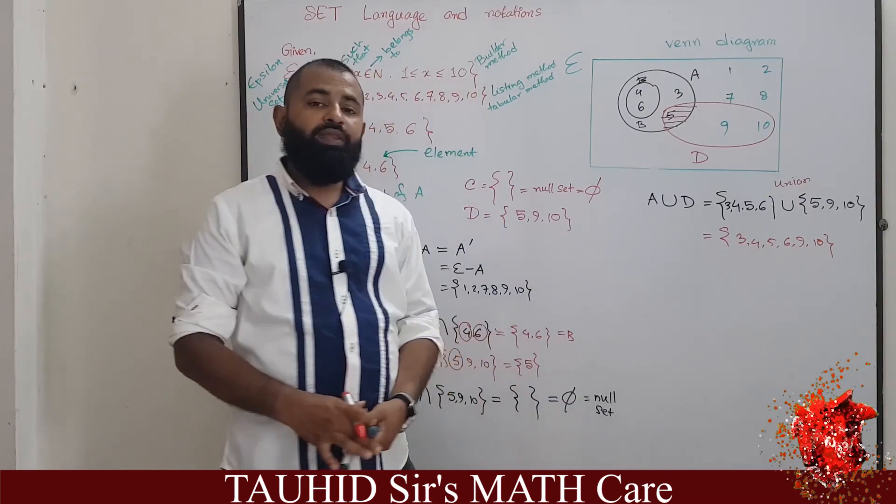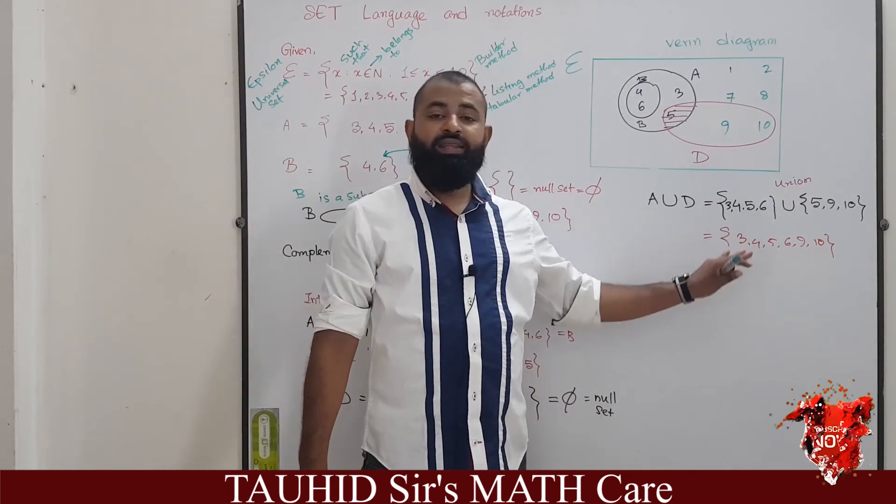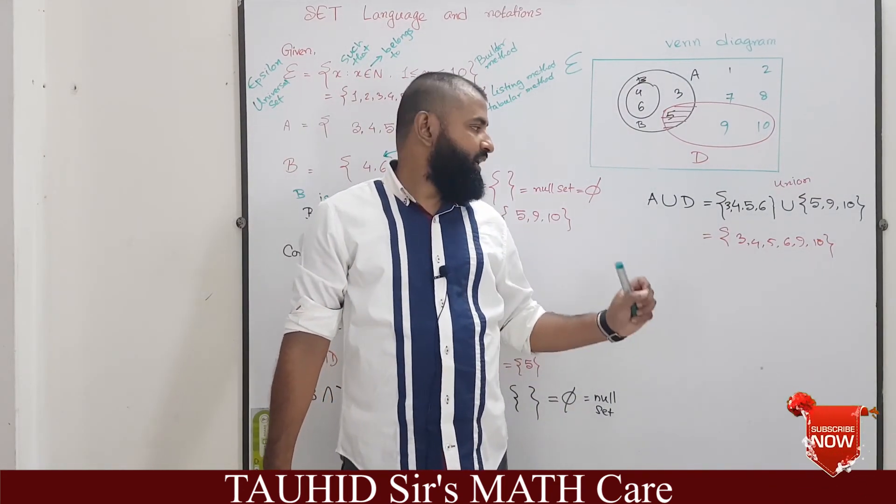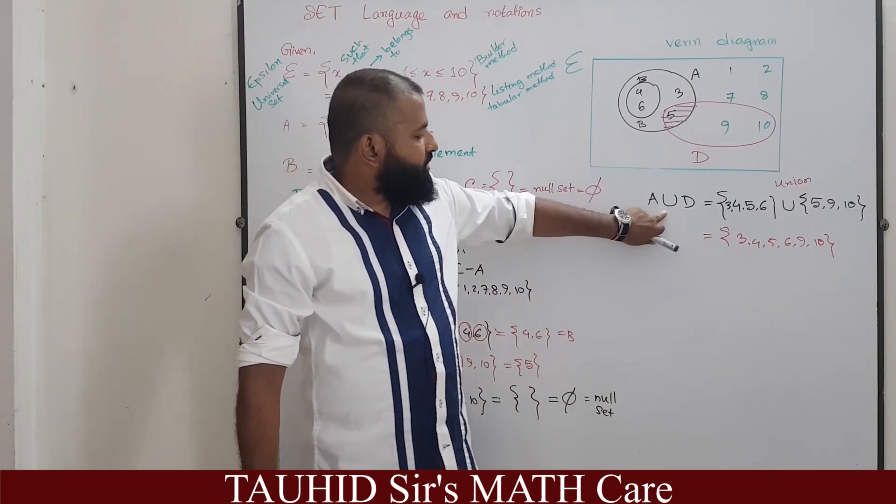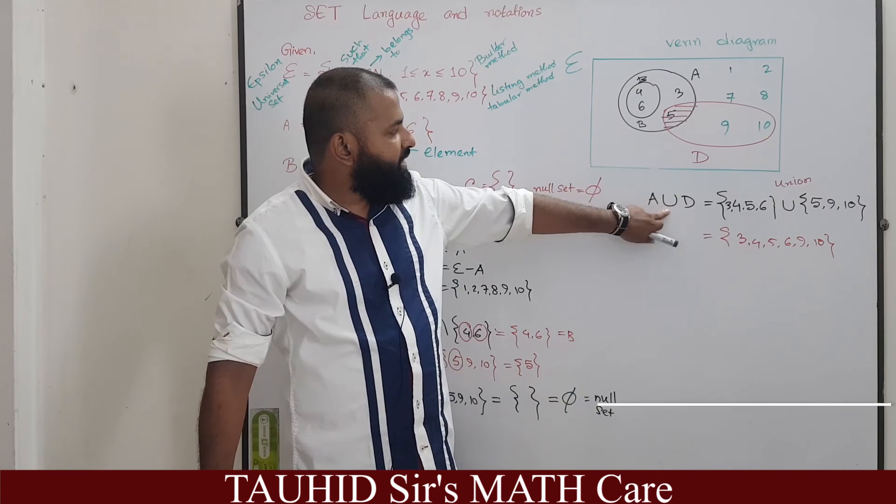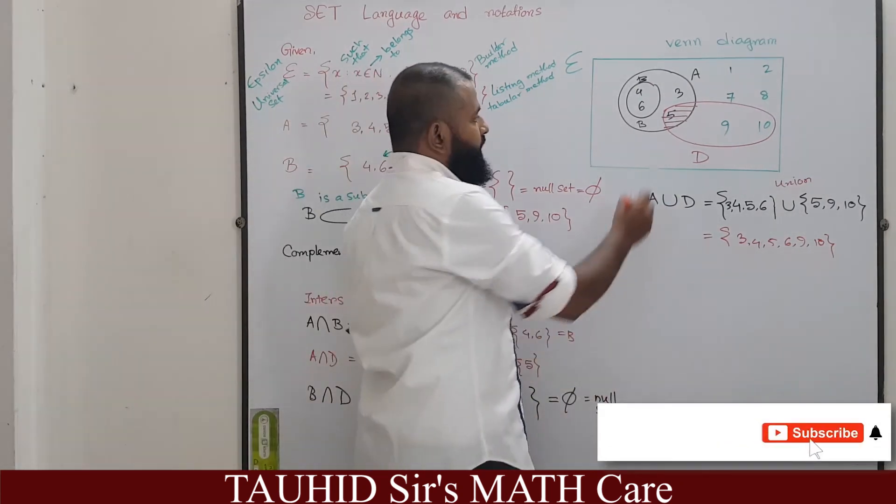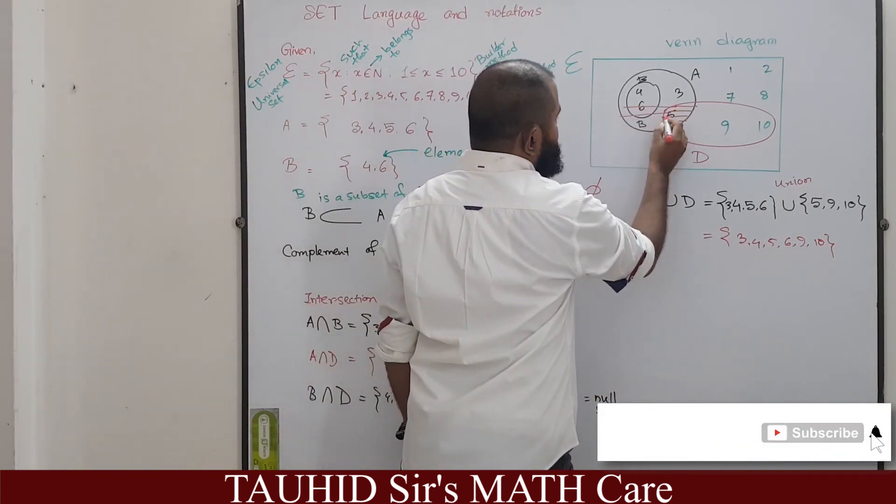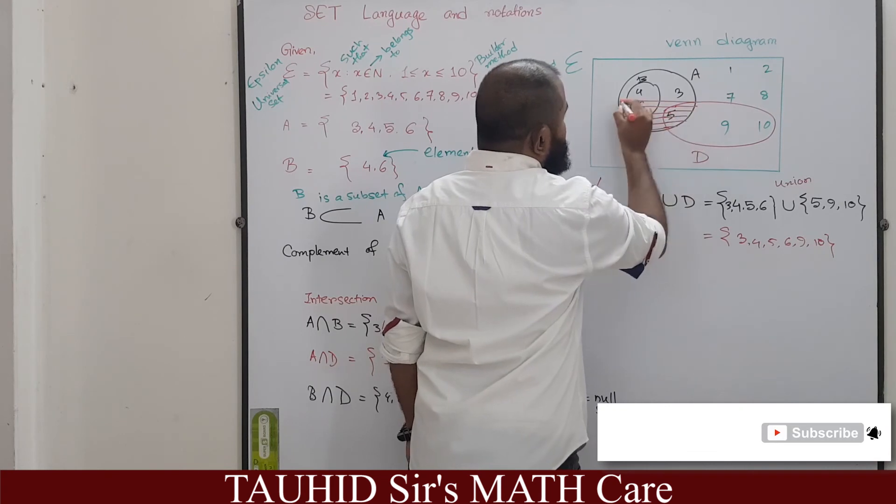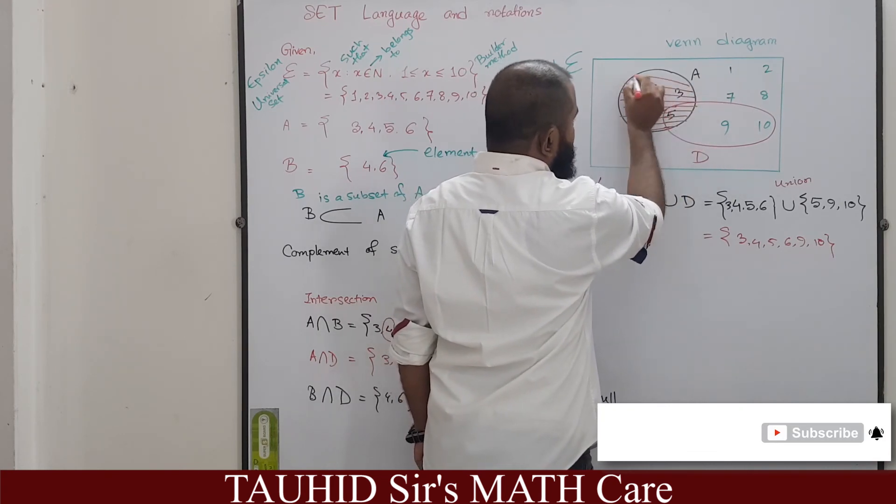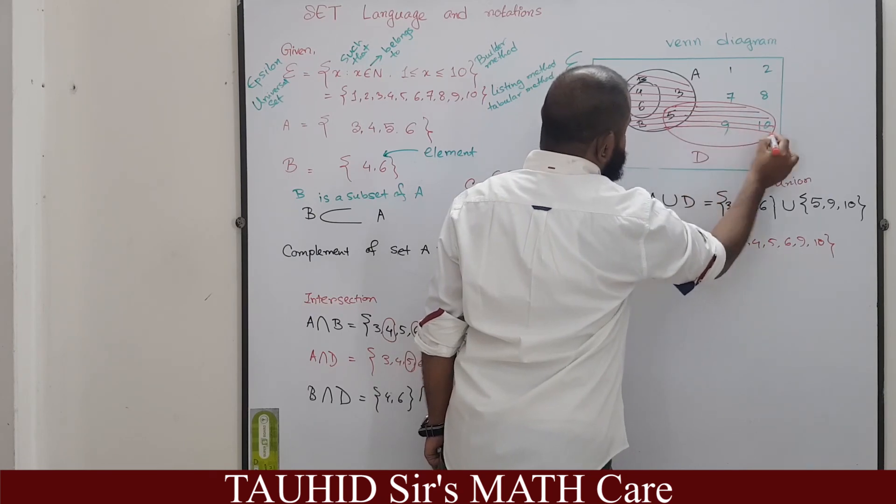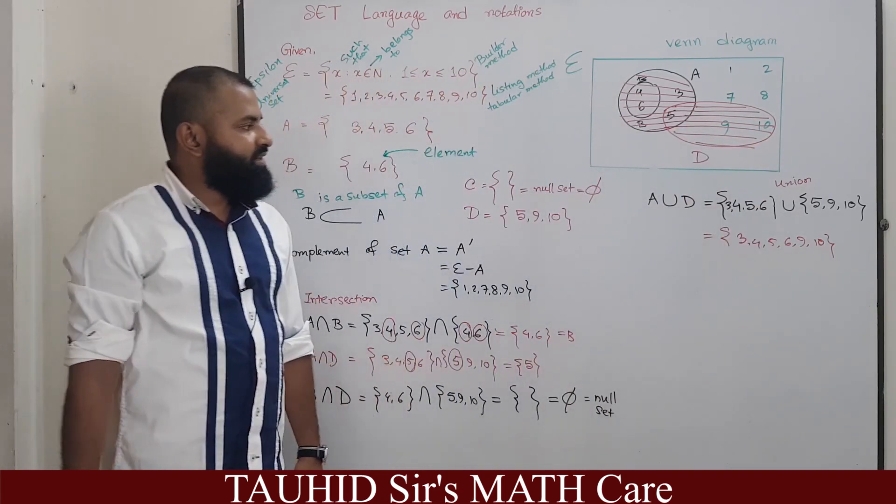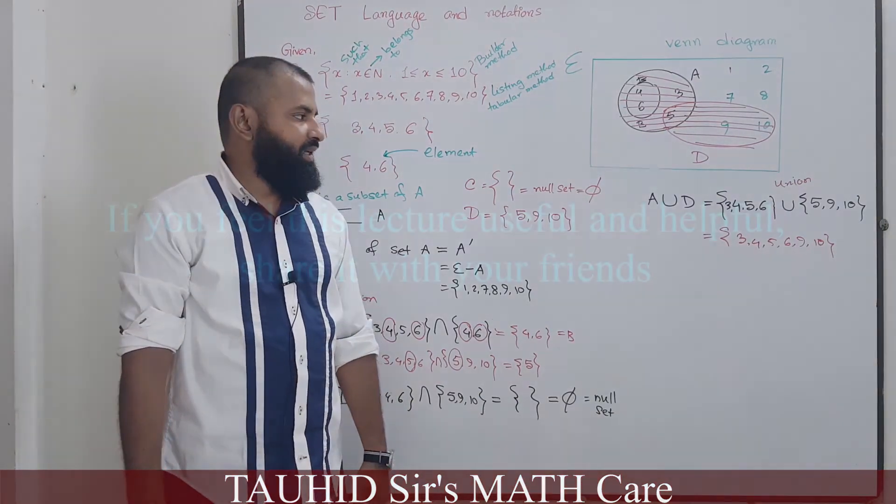So each element present here will be written: 3, 4, 5, 6, 9, 10. And remember that we won't repeat any element, we will write each element once. So which region in Venn diagram this set represents? It represents this area, the complete area of A and D combined. This area is represented by A union D.